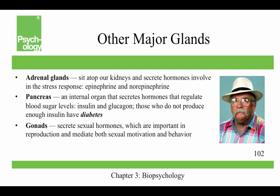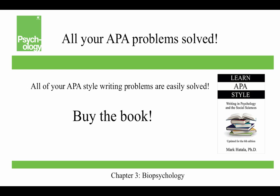People who do not produce enough insulin have diabetes. The speaker mentions his middle son was diagnosed with Type 1 diabetes at age 12 — he wasn't growing and was losing weight, but diabetes is a very treatable illness. The gonads secrete sexual hormones important in reproduction and mediate sexual motivation and behavior — the female gonads are the ovaries and the male gonads are the testes.